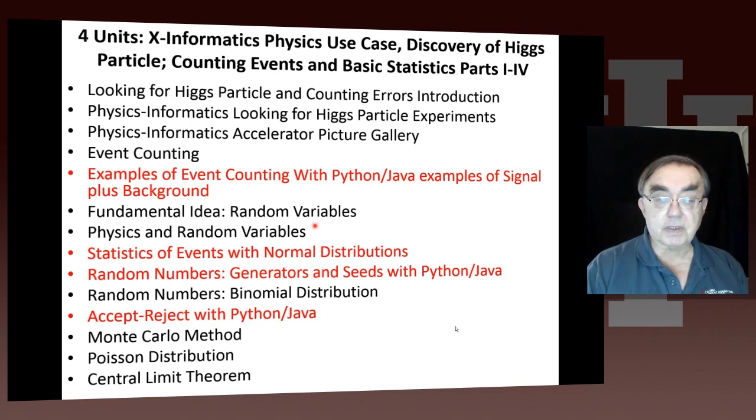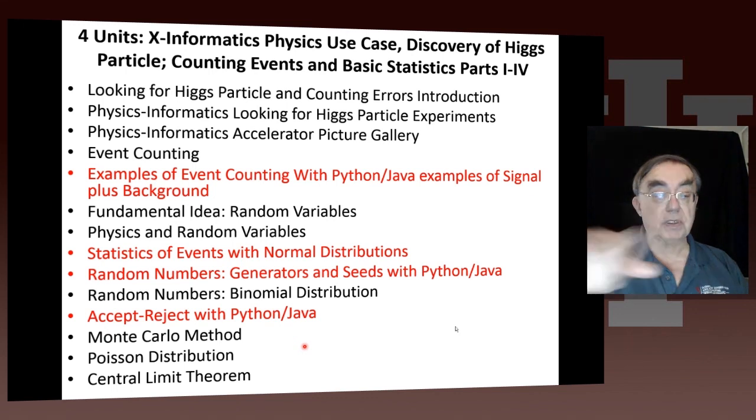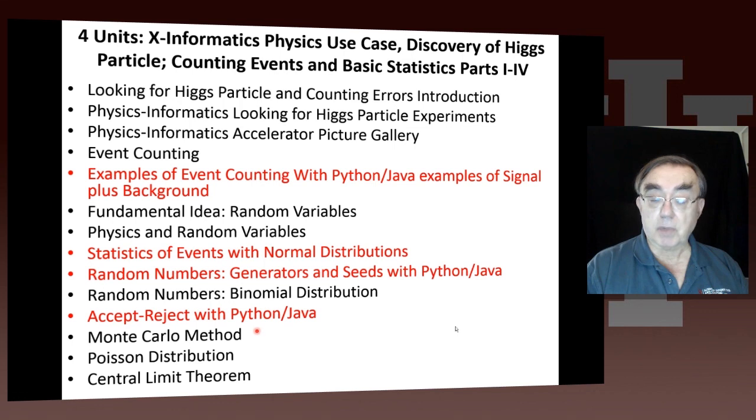Then we look at fundamental analytics issues: random variables and the use of random variables in physics, the statistics of events with normal or Gaussian distributions. Then we look at random numbers and how you generate them, and what their seeds are, and we do that with Python and Java. Then we look at particularly important distributions, the binomial and Poisson distributions. We use the so-called accept-reject method, which is one of the more important ways of generating general distributions. The distribution tells you what the relative probability of particular events is.